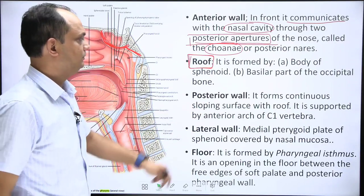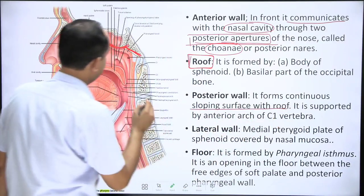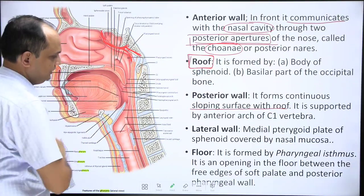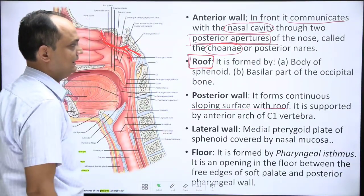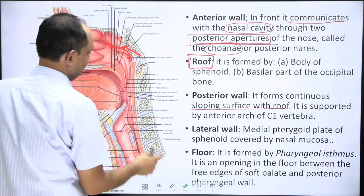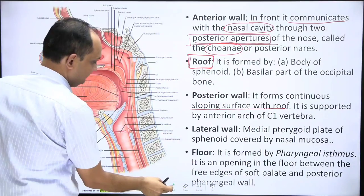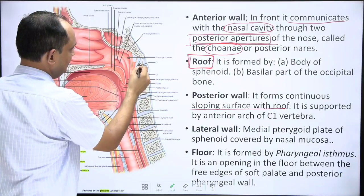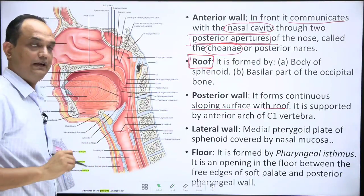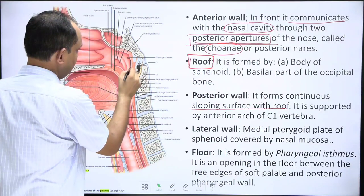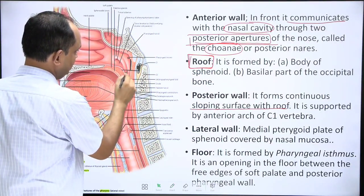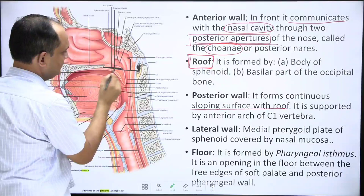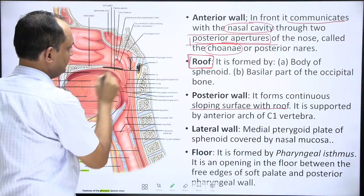The posterior wall is a sloping surface continuous with the roof. It lies in front of the C1 vertebra, as established by the anatomical limit of the nasopharynx at the level of C1. The posterior wall of the pharynx, up to the level of the superior surface of the soft palate, is considered the posterior wall of the nasopharynx.